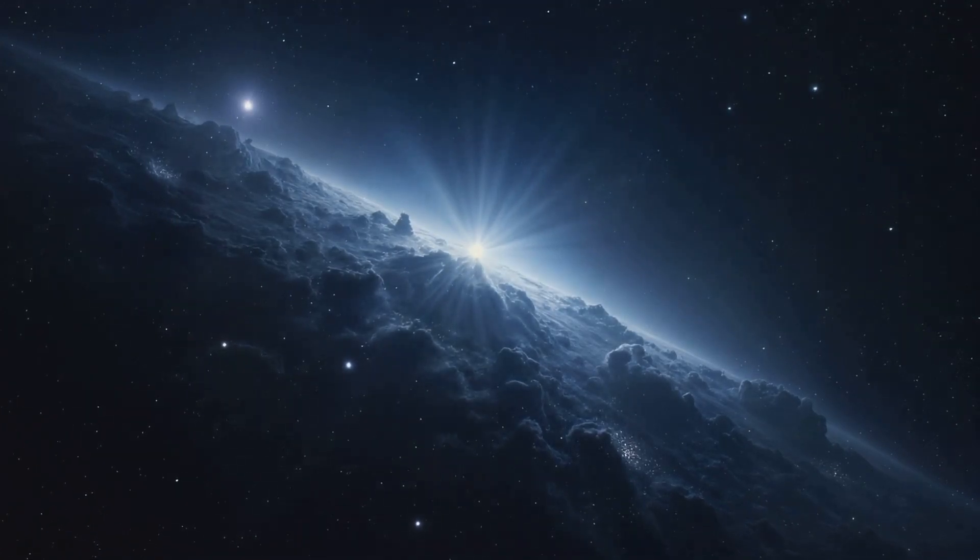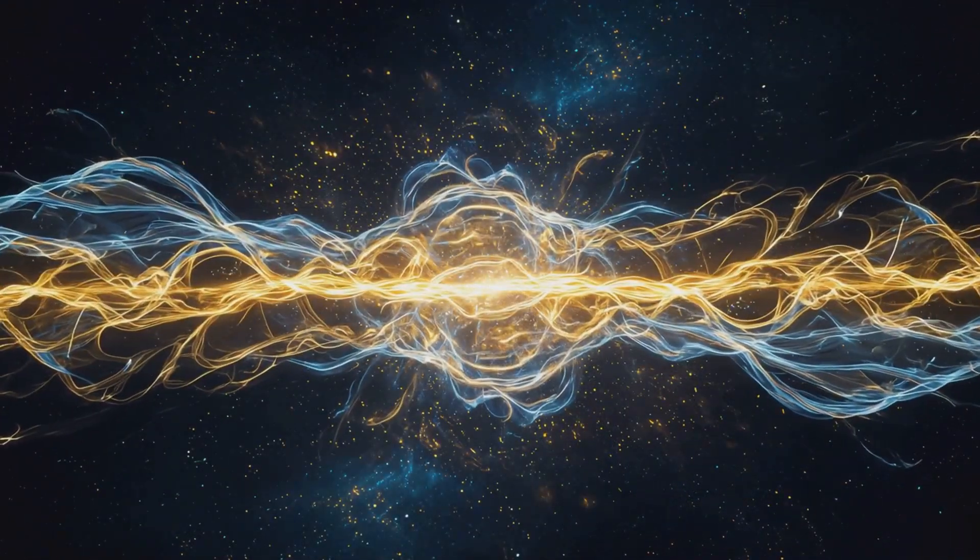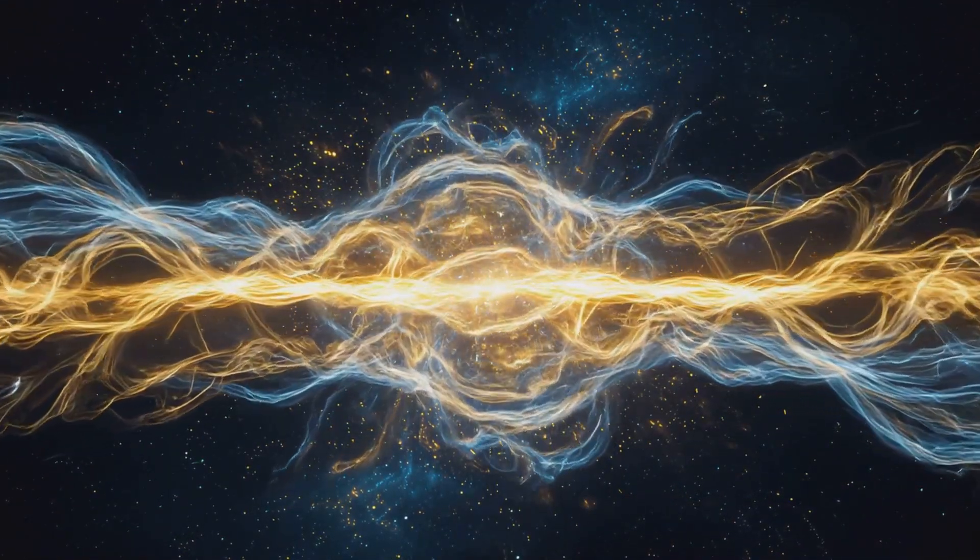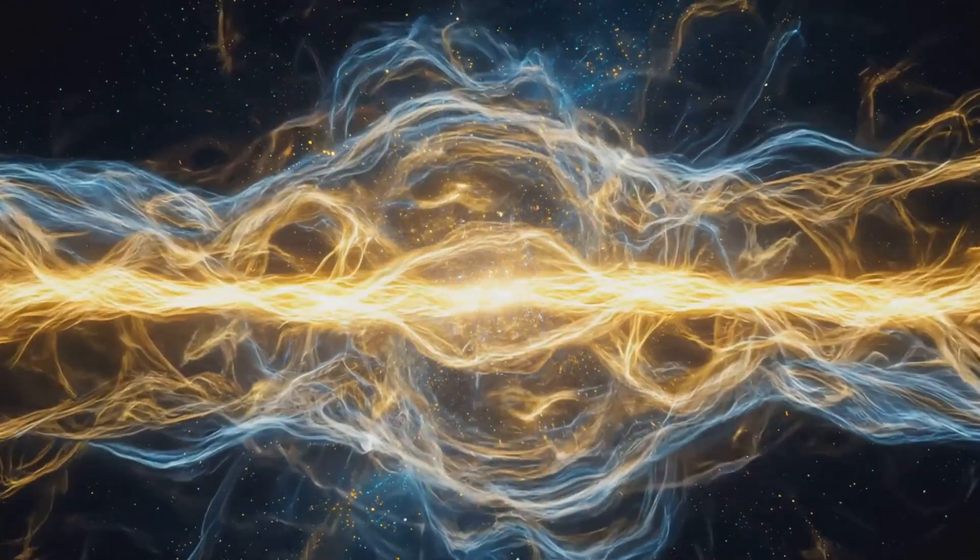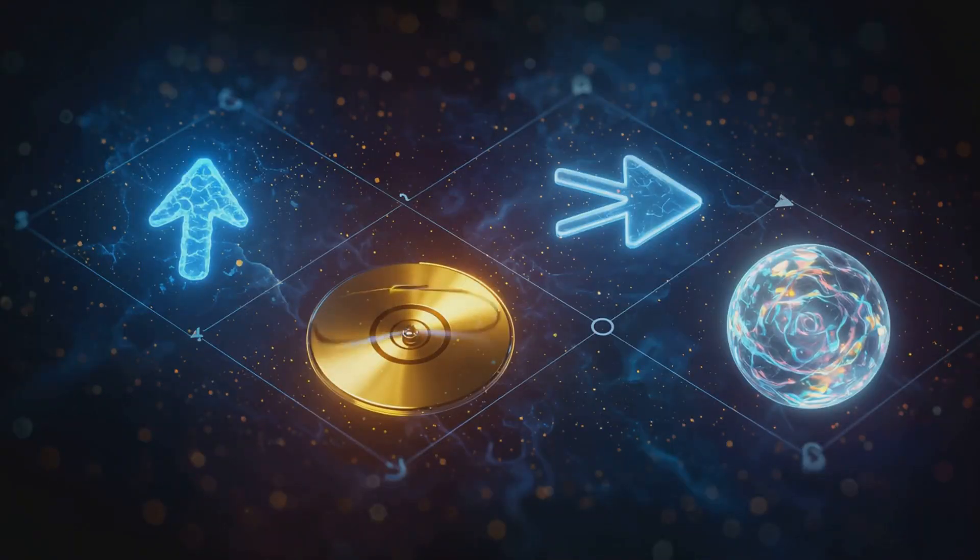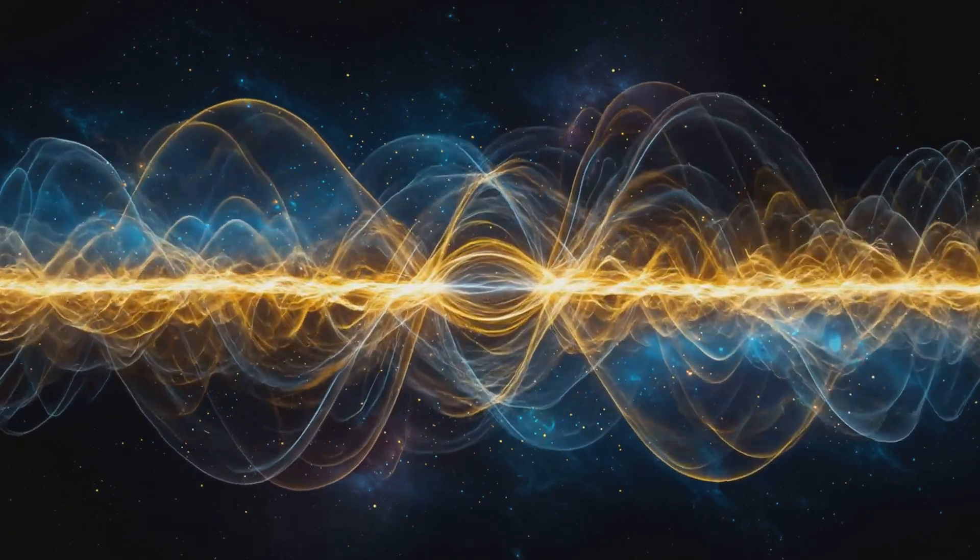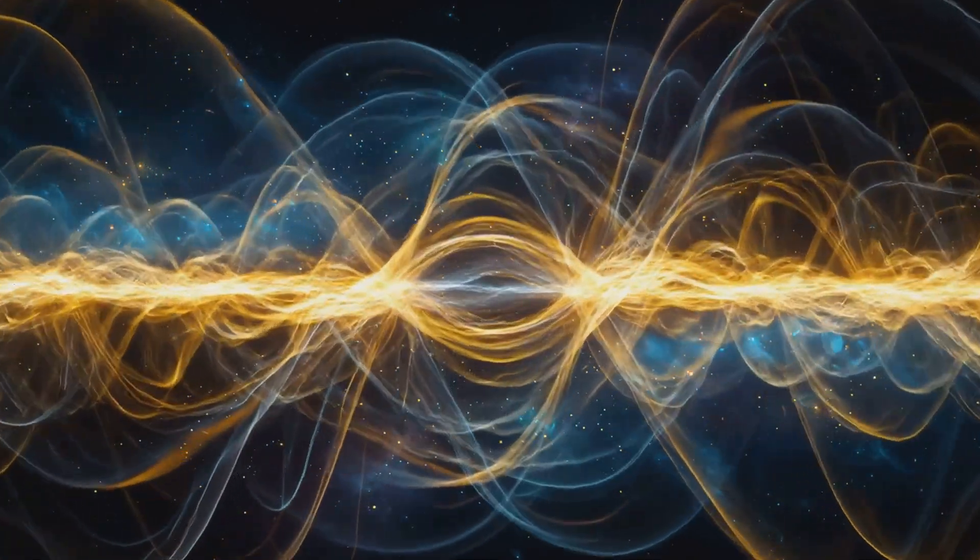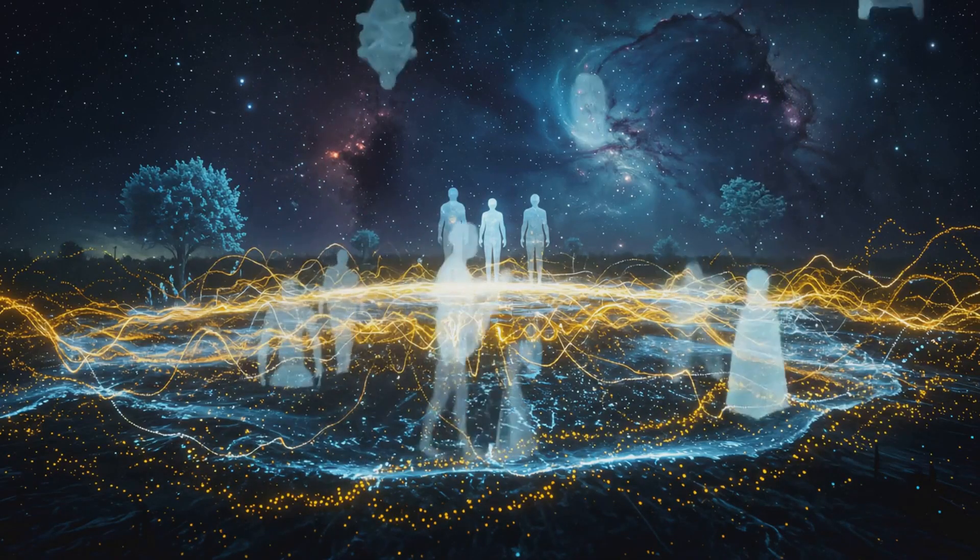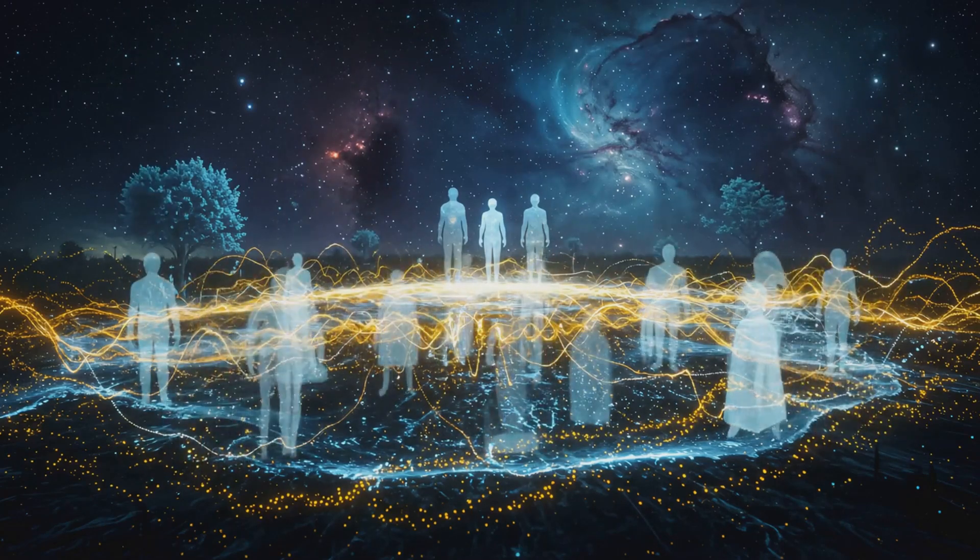If the universe could be written as a single line, it would say reality is the sum of all decoherence-resistant quantum frequencies. Each one defined by its amplitude, its likelihood, angular frequency, its spin, wave vector, its direction and phase, its starting point. Together they interfere and overlap into the projection of all that we see, feel and become.